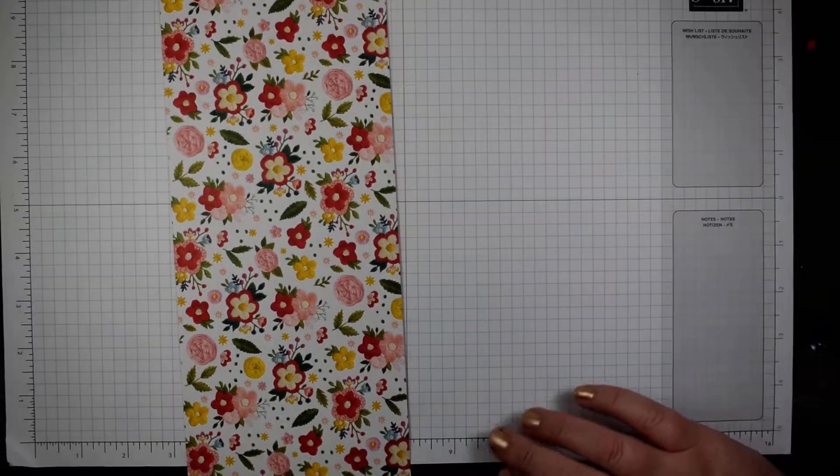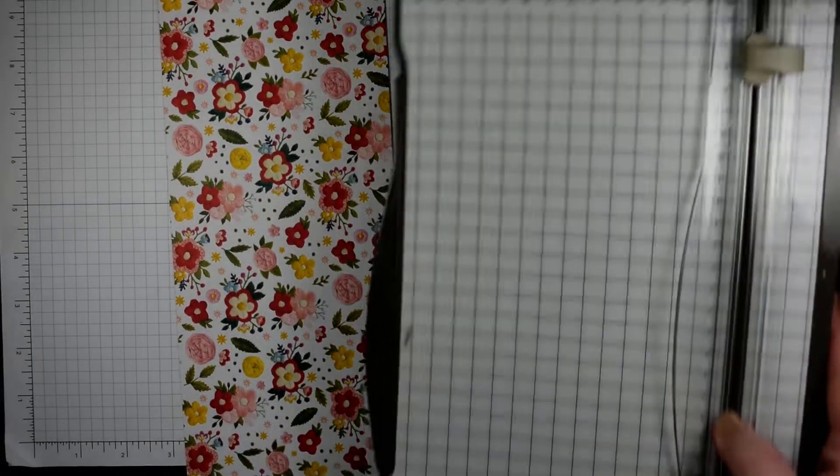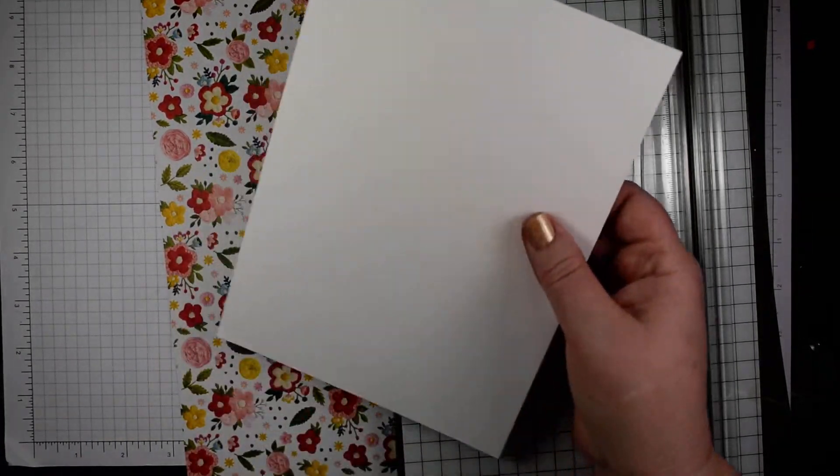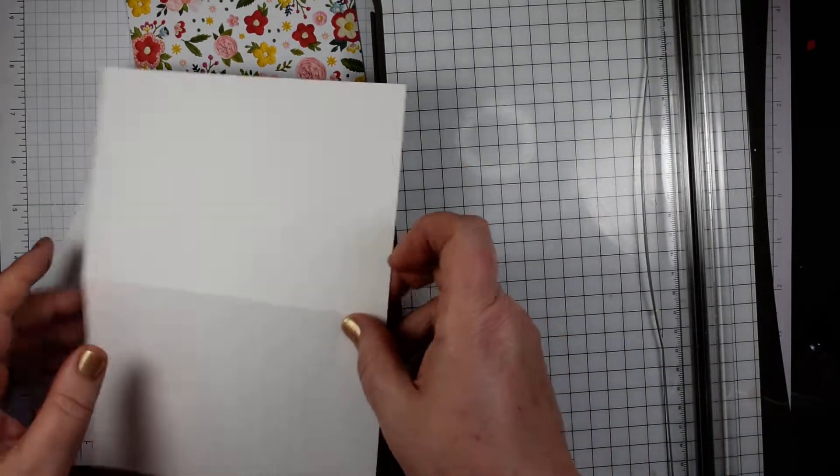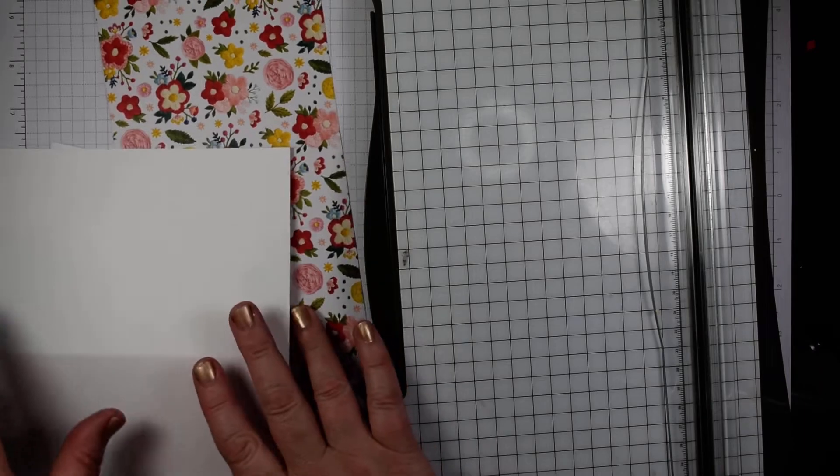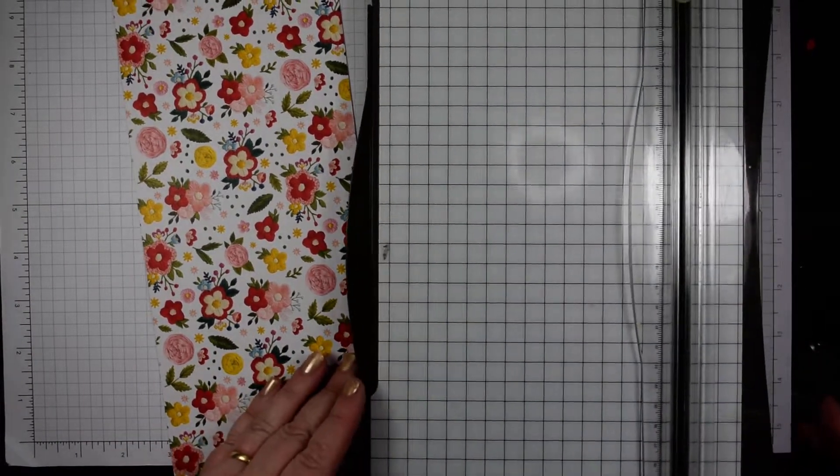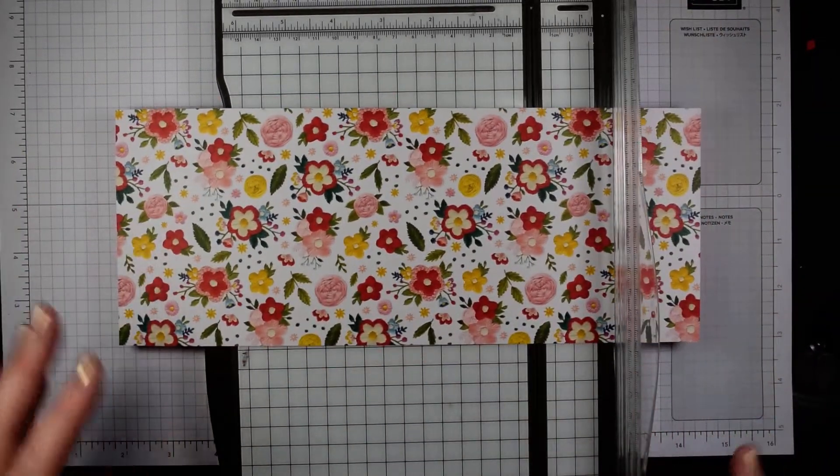So without any further ado, take one of the note cards which is dead easy because that's already prepped for you, so it's already scored as well. All you need to do is just fold in half and reinforce that crease. Then we'll do some stamping, and before we do too much of that, I'm actually going to do some cutting of those layers and they are so quick and easy to do.